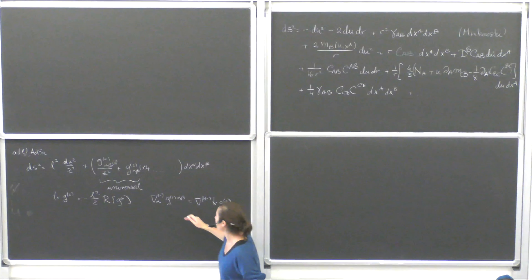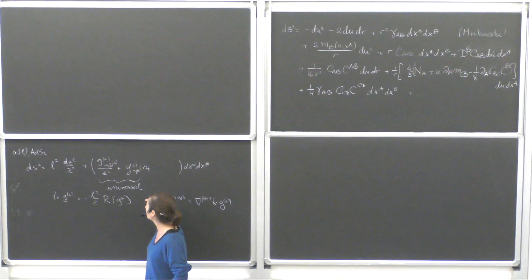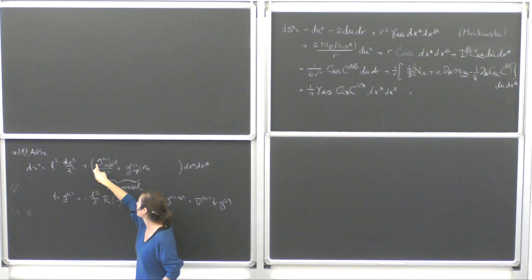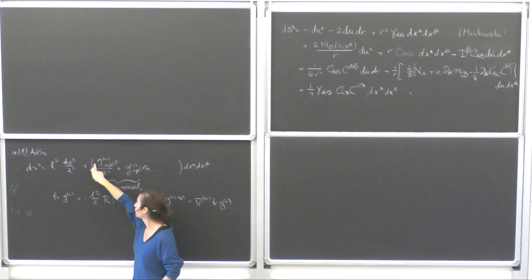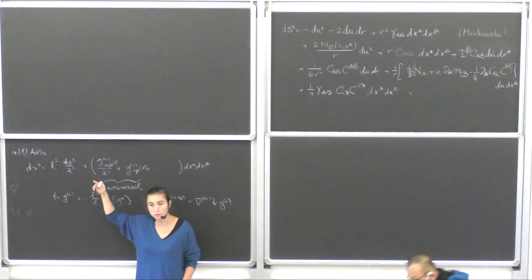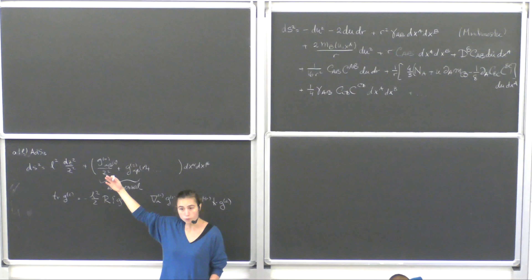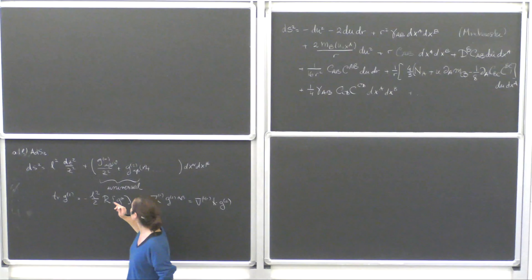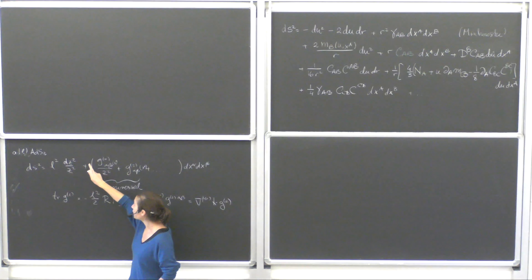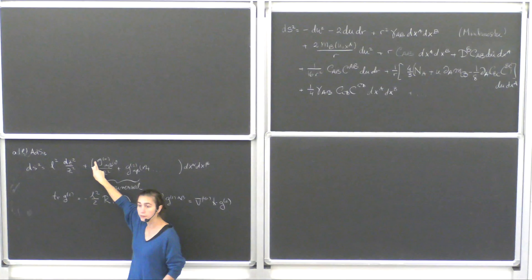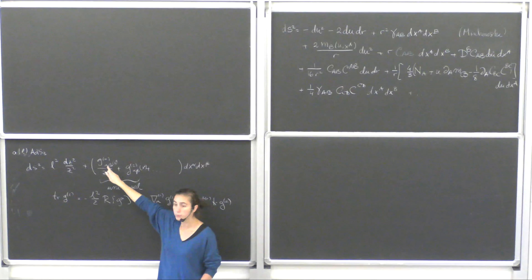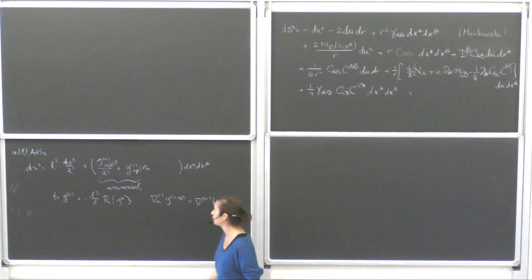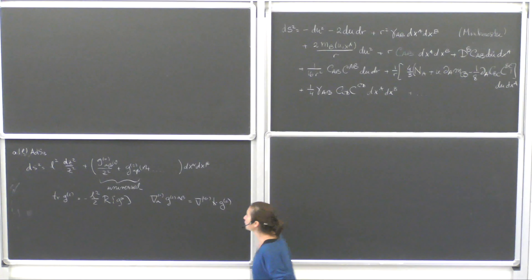As some people were pointing out at the end of the lecture, g0 determines the boundary metric only up to a conformal factor, because this is how we define the conformal boundary — up to an overall rescaling. Spacetimes are called asymptotically AdS if g0 is conformal to the Minkowski metric, and asymptotically locally AdS if it's some arbitrary metric. In two dimensions it doesn't matter, but in higher dimensions that's the case.